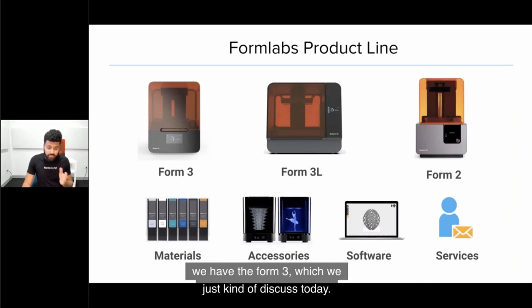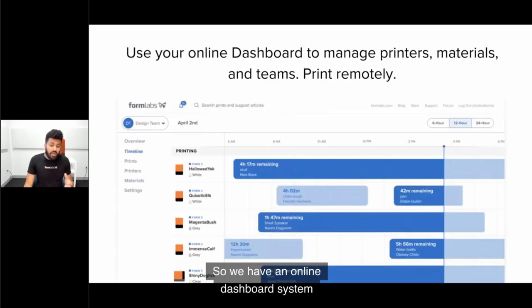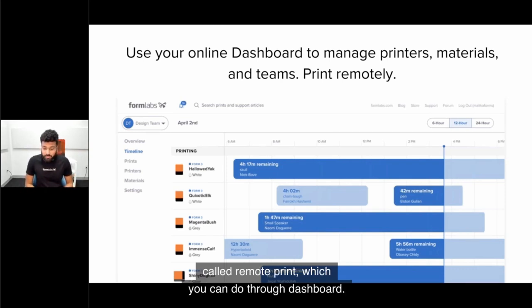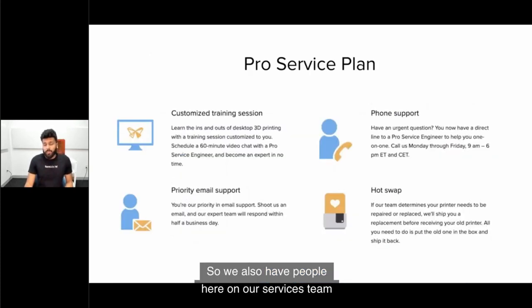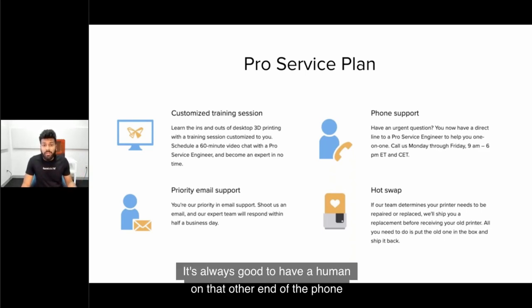Our product line, really quick snapshot. We have the Form 3, which we discussed today. Then we have the Form 3L, which has five times the build volume of the Form 3 and will be shipping later this year. We have a materials library, accessories to help you post-process, and software and services to help you. We have an online dashboard system that helps you manage your printers, materials, and teams. A brand-new feature called Remote Print through dashboard. We also have people on our services team dedicated to help you. In our pro-service plan, you'll be able to rely on our services team to make sure your answers and questions are solved. I love this because it's always good to have the comfort of a real support team.